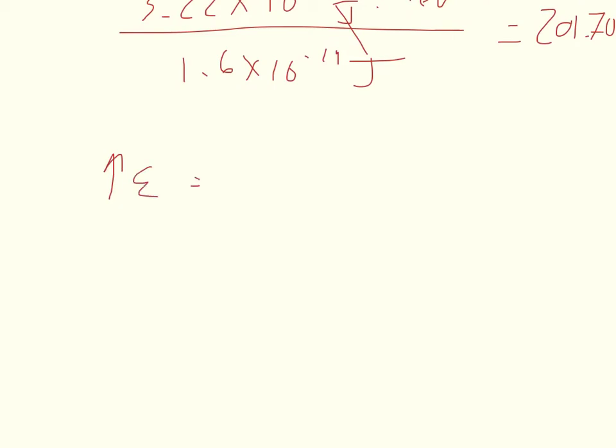So if the energy we said was equal to H times F, and the velocity is equal to lambda times F, if energy goes up, Planck's constant can't change at all. The frequency has to go up. So if the frequency goes up, what happens to the wavelength?